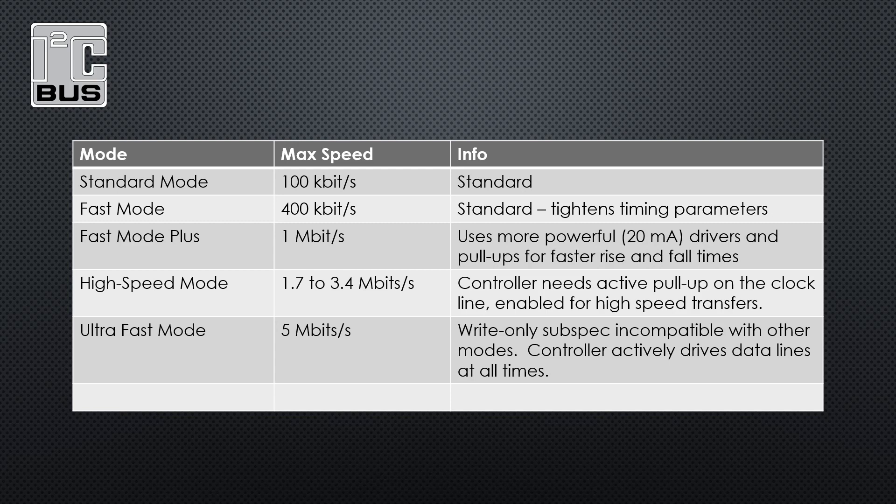There is high-speed mode. In this case, both master and slave must be high-speed enabled to get the 3.4 megabits per second transfer rate. This speed is achieved by master devices having current source active pull-up circuits on the clock line to shorten the rise time. To initiate a high-speed transfer, the master will send a reserved address at standard speed after the start condition. This reserved address begins with four zeros and a one. If the master receives the acknowledge, it will continue the transmission at high speed. High-speed devices are backward compatible, so they can be used in mixed device systems.